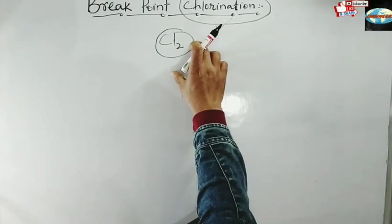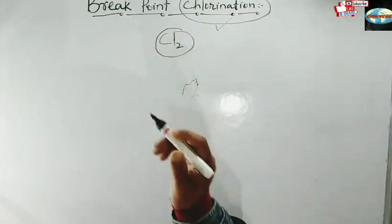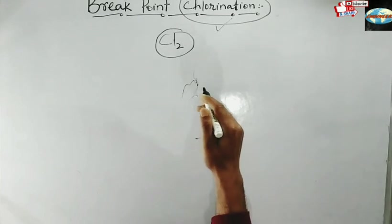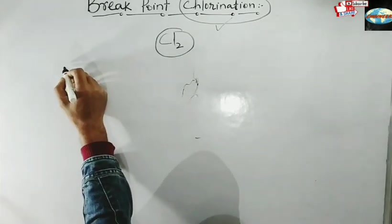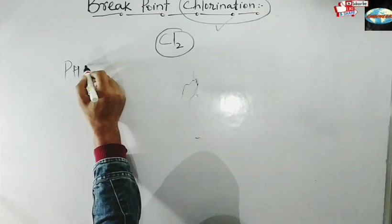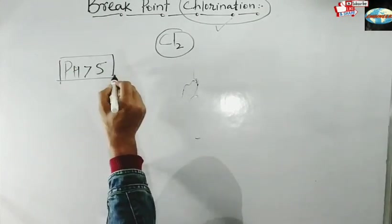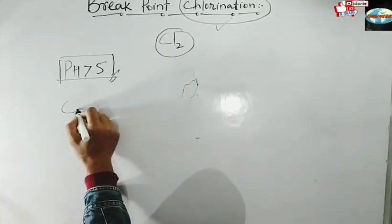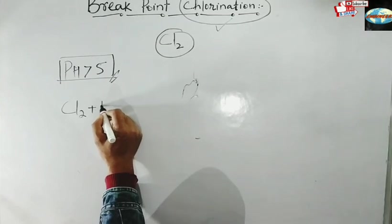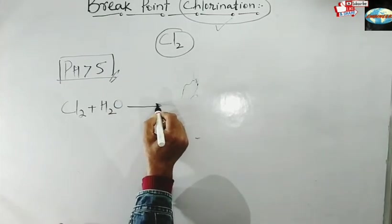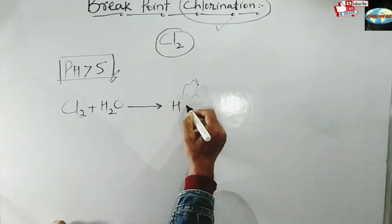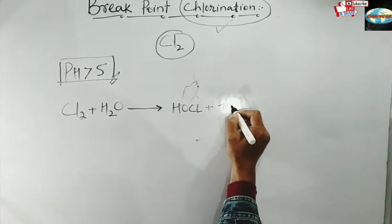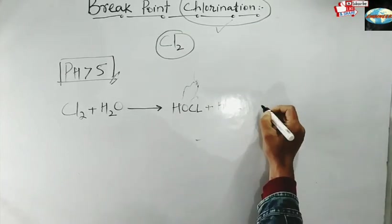Chlorine does not react with water when you just add it, but generally above pH 5 — when the pH of water is greater than 5 — chlorine is reactive. When chlorine is added to water under these conditions, the reaction is: Cl₂ + H₂O → HOCl (hypochlorous acid) + HCl (hydrochloric acid).